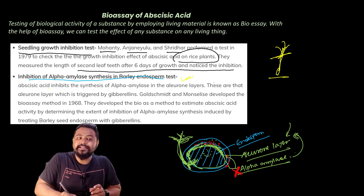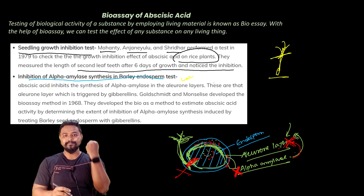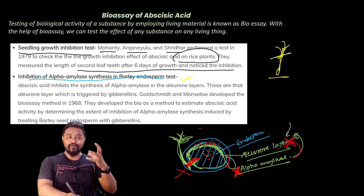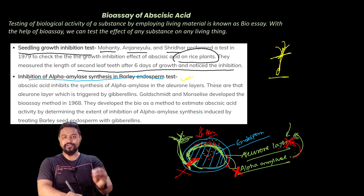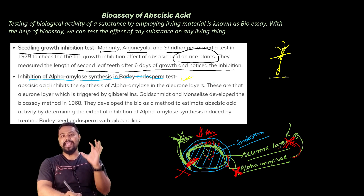If abscisic acid is present, it inhibits the aleurone layer from secreting alpha amylase. By varying the concentration of abscisic acid applied to barley endosperm, you can test how much inhibition occurs — this is how you test abscisic acid bioassay activity.